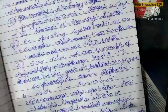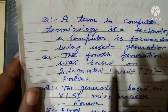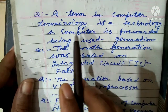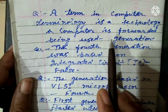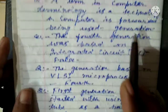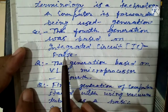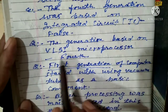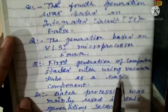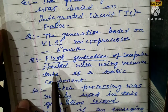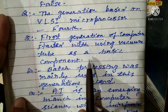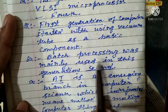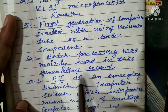In this chapter — Chapter One, The Evolution of Computers — a term in computer terminology refers to a technology that a computer is known for in each generation. The Fourth Generation was based on integrated circuits: False. The fourth generation was based on VLSI microprocessors. First Generation computers started with vacuum tubes as the basic component. Batch processing was mainly used in the Second Generation.